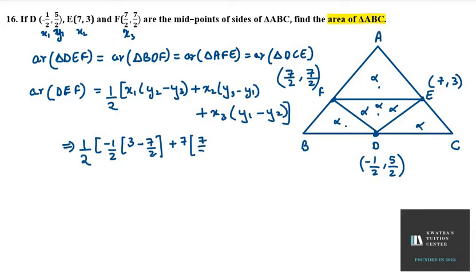Then we have Y3, Y3 is 7/2 minus Y1, Y1 is 5/2. Then we have X3, X3 is 7/2. Y1 minus Y2, Y1 is 5/2 and Y2 is 3.